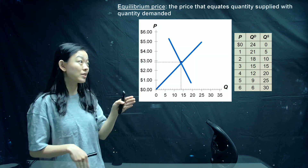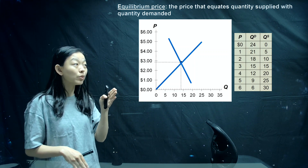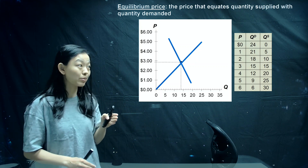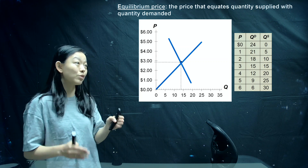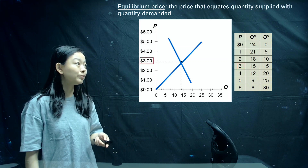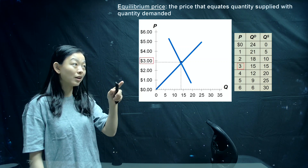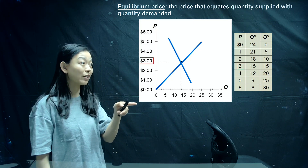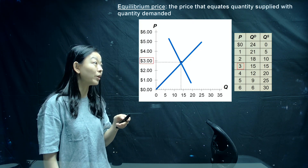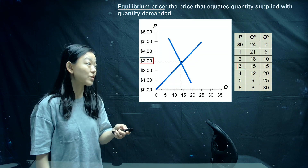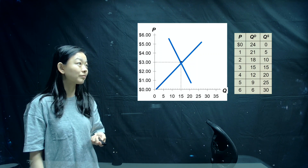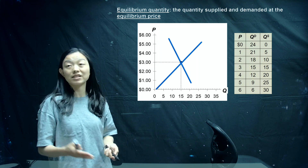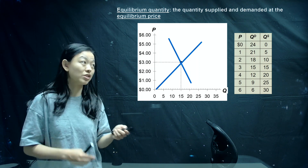From this table, you can see when price equals $3, we have quantity demanded equal quantity supplied, both equal 15 units. So at $3, that will be our equilibrium price. Correspondingly, we can find our equilibrium quantity, which will be 15 units. Equilibrium quantity is the quantity at which demand and supply equal each other.